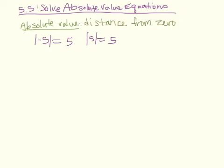The only time these problems get super tricky is when I put a negative sign outside of the absolute value bars. So if I have negative absolute value of five, I know that the absolute value of five is positive five, but then I have to bring that negative in at the end, so it's going to actually be negative five.